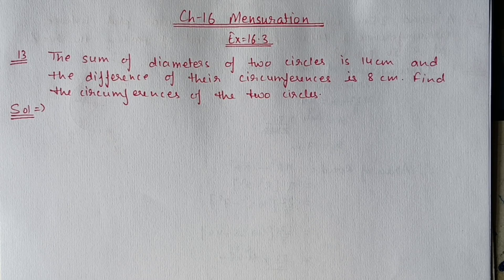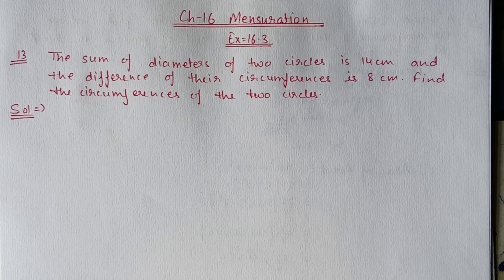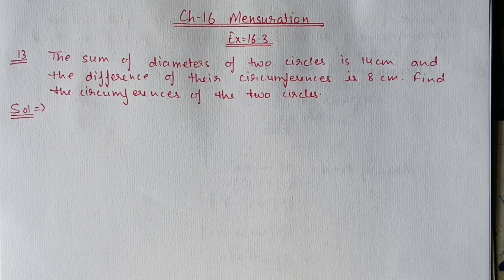Hello students, we are doing Chapter 16 Mensuration Exercise 16.3. In today's video we will start from Question 13. Question 13: the sum of diameters of two circles is 14 centimeter and the difference of their circumferences is 8 centimeter. Find the circumferences of the two circles.